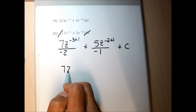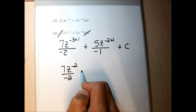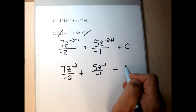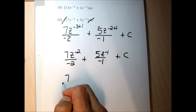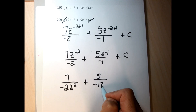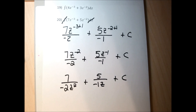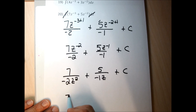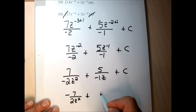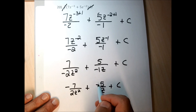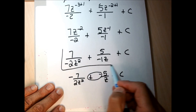This gives 7z to the negative 2 over negative 2, plus 5z to the negative 1 over negative 1, plus C. Moving the z's down to the denominator: 7 over negative 2z squared plus 5 over negative 1 times z, plus C. The 5 divided by negative 1 is negative 5. Moving the negative sign out front of the fraction and changing plus negative to minus gives the simplified final answer.